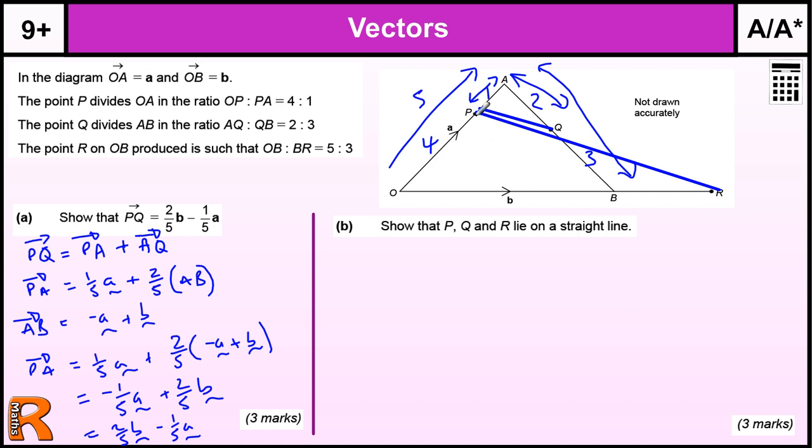So we already know PQ. That's all been done for us. All we've got to do is work out PR. So to work out PR, we need to come back down here and go all the way along there. We are told R on OB produced is such that OB and BR is in a ratio of 5 to 3. So OR, if that's 5 and that's 3, that's going to be...